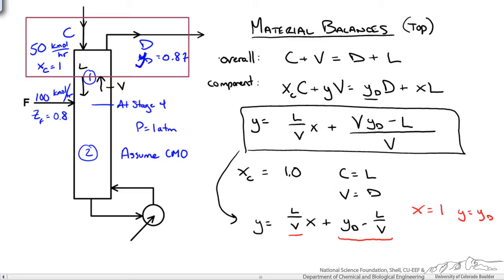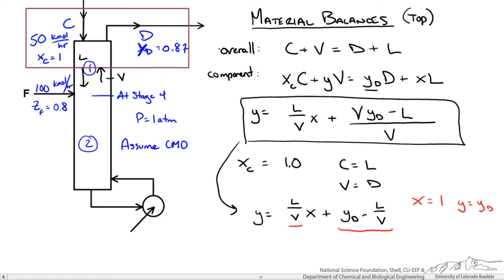We also know what L and V are since we already did the material balance to solve for C and D. We said L equals 50 kmol per hour and D equals 150. We could place this into our operating line equation and get an equation we could plot on our diagram. So this becomes our equation.